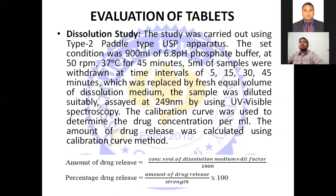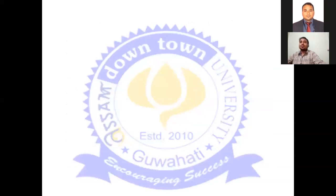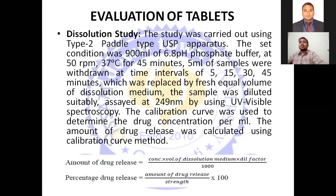After taking the samples, they are properly diluted and the absorbance is measured at 249 nanometers using a UV visible spectrophotometer. The amount of drug released is calculated by the formula: amount of drug release equals concentration multiplied by volume of dissolution medium multiplied by dilution factor, divided by 1000. Percentage drug release equals amount of drug release divided by the label strength, multiplied by 100.